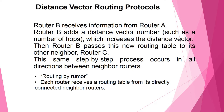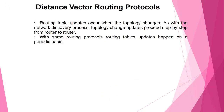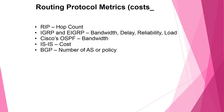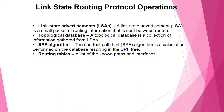With distance vector routing, Router B receives routing information from neighboring routers including the distance vector — for example, hop count. Router B then passes its updated routing table to other neighbor routers. This same step-by-step process occurs in all directions between neighbor routers. Each router issues routing table updates to directly connected neighbors. The full routing table update occurs when the topology changes. Protocol metrics include: RIP — hop count; IGRP and EIGRP — bandwidth, delay, reliability, load; IS-IS and OSPF — cost; BGP — number of ASes and policy.